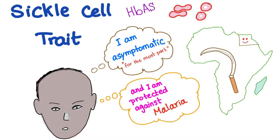We have spent the last four videos talking about sickle cell anemia. Now let's turn our attention to sickle cell trait. Sickle cell trait is found in Sub-Saharan Africa. This African kid is asymptomatic for the most part, and is protected against malaria, especially Plasmodium falciparum malaria. That's why sickle cell trait exists.